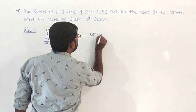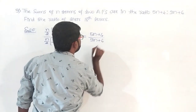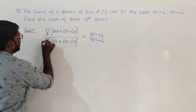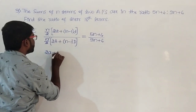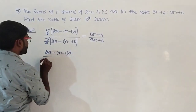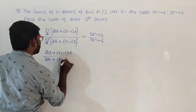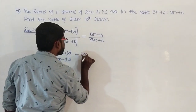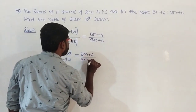Now let us simplify. The n by 2 and n by 2 cancel. We write the remaining terms: 2a plus n minus 1 into d, divided by 2A plus n minus 1 into capital D, equals 5n plus 4 divided by 9n plus 6.